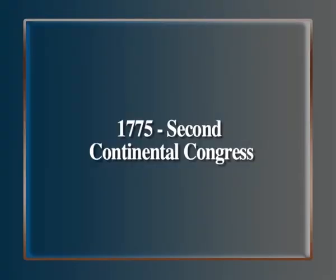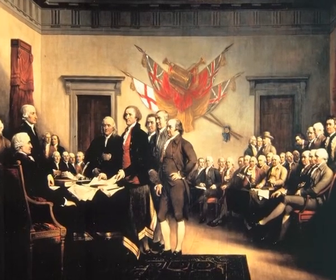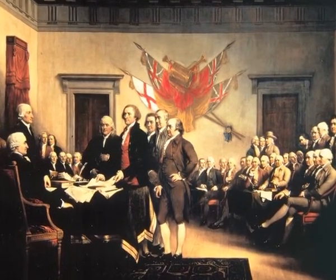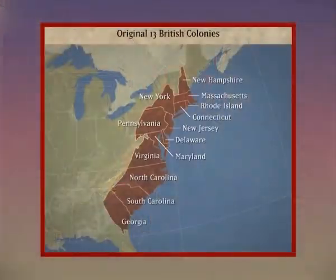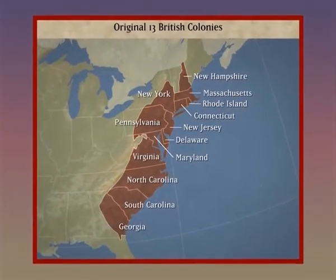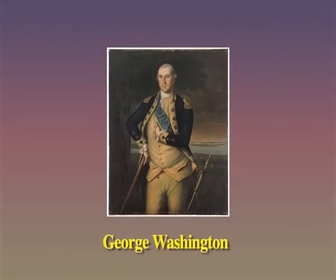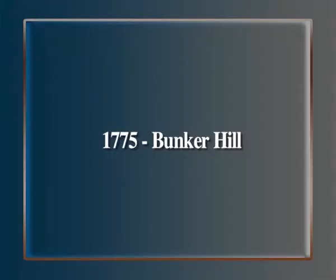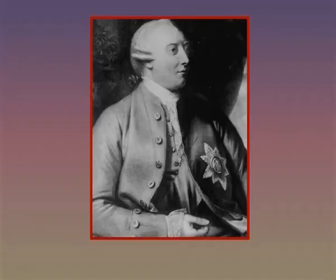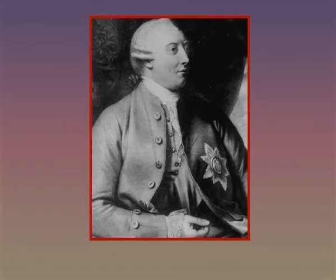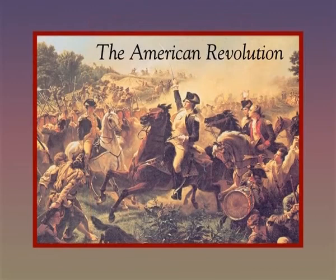1775: Second Continental Congress. All 13 colonies were represented at this meeting in Philadelphia during May. The colonies still hoped that the grievances would be met by King George III. George Washington was named the head of the Continental Army. 1775: Bunker Hill. The major victory for the colonies resulted in King George III proclaiming the colonies in rebellion.